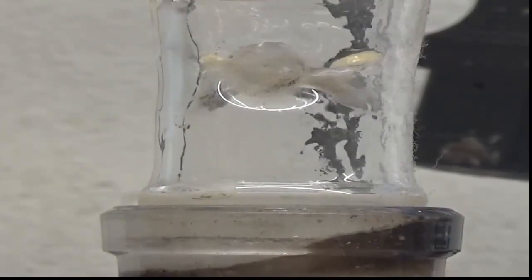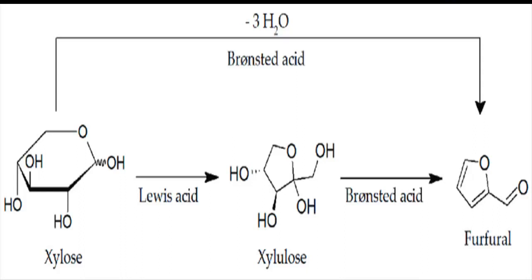During this process, each molecule of xylose loses three molecules of water to generate one mole of furfural.